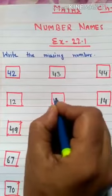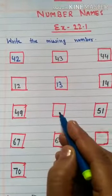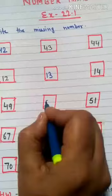So we have to write 13 here. Next is 49. We also write the between number here. 51 is given. Then 49, then 50, and 51.